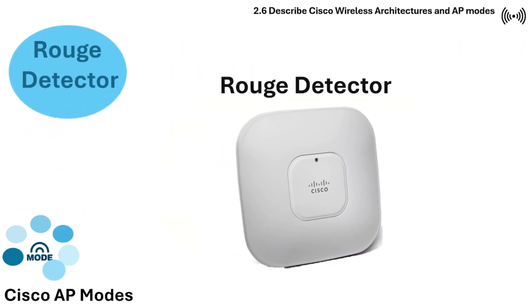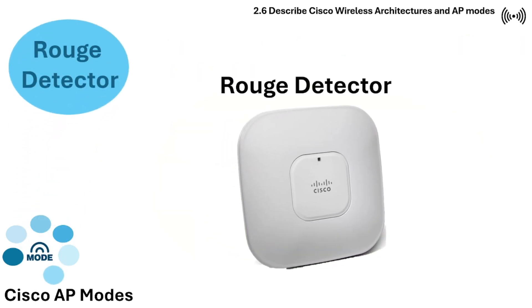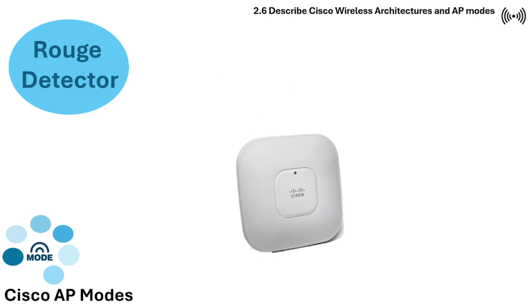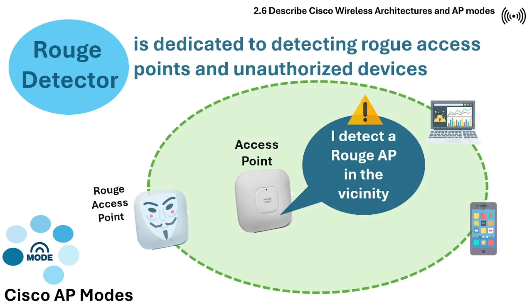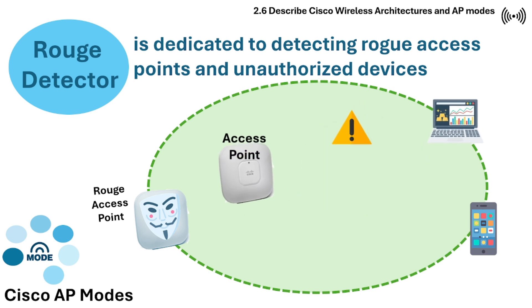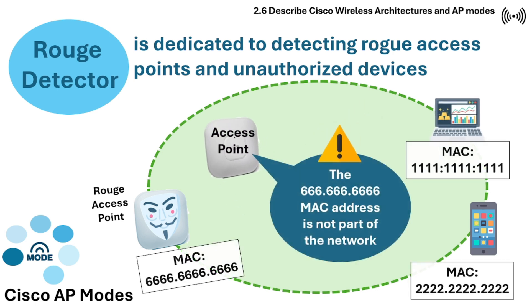In Rogue Detector mode, the AP is dedicated to detecting rogue access points and unauthorized devices within the network's vicinity. Detection is done by comparing MAC addresses on the LAN with those on the WLAN to detect rogue device entries.